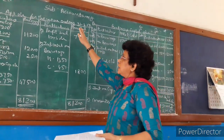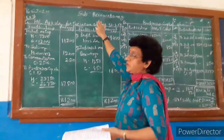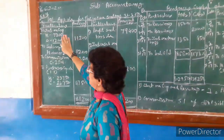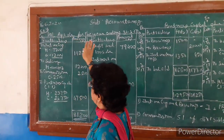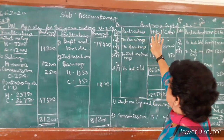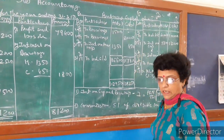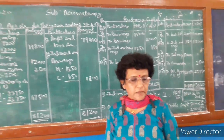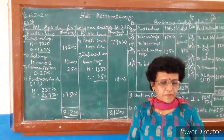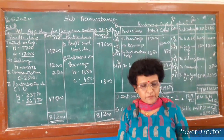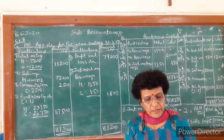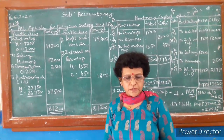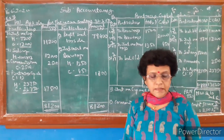Today, in Class 12, first chapter, we begin with the example of preparation of appropriation account and partner's capital account. In your PDF of the account text part 1, if you see chapter 1, the 8th question is given. So, everyone please check out question 8.